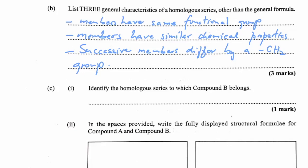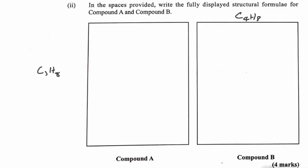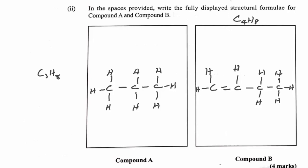We're asked to draw the fully displayed structural formula for compound A (C₃H₈) and compound B (C₄H₈). For the alkane, all carbons must have four bonds. Compound A is propane (C₃H₈) and compound B is butene (C₄H₈), which is our alkene. A is the alkane and B is the alkene.